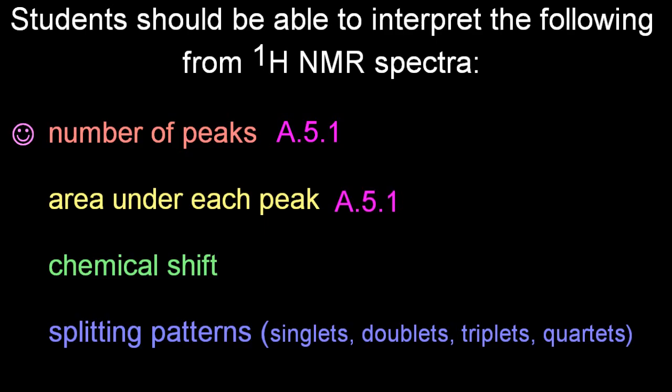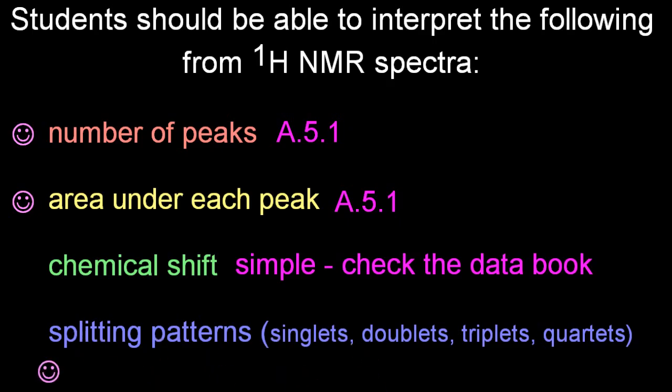What the area under each peak means is also in A5.1. Chemical shift, just got to check the data booklet and it tells you the identity of the groups. Splitting patterns, that's easy to calculate, just add one.